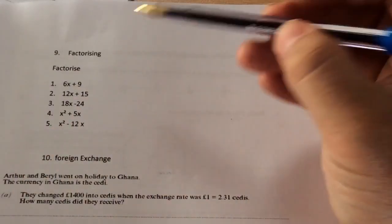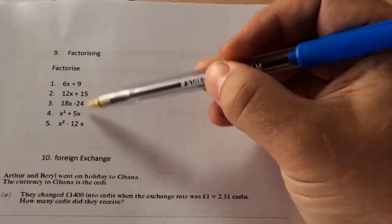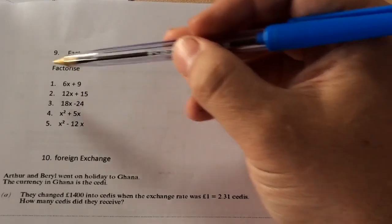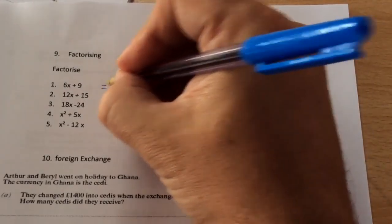Topic 9, factorising. When we factorise, we look for the highest common factor, the highest number or highest letter, the terms of how many letters go into both of these numbers. So the first one is 6x plus 9. The highest number that goes into 6 and 9 is a 3.